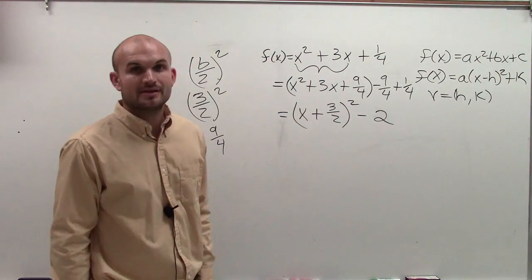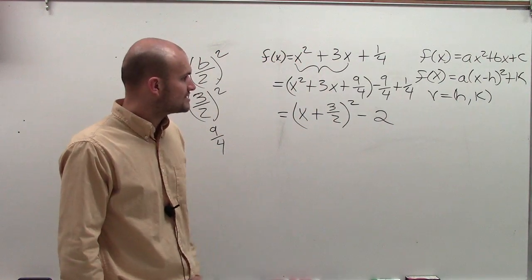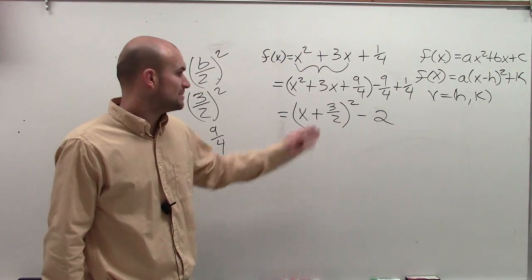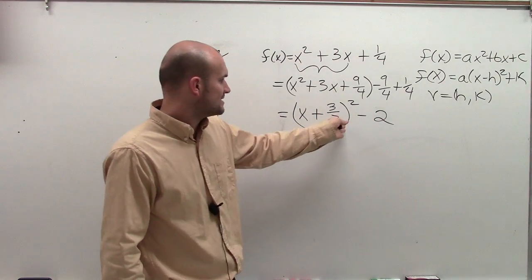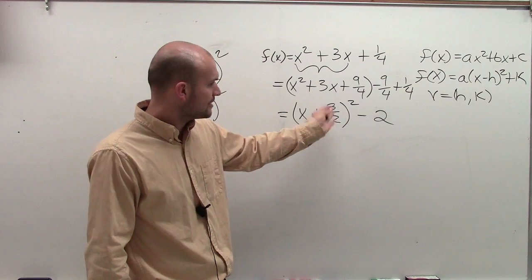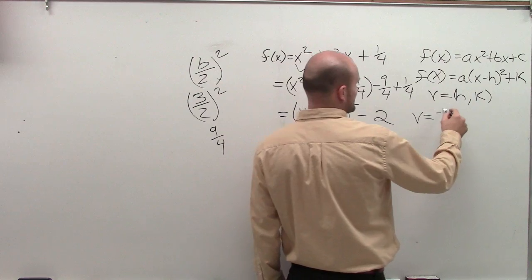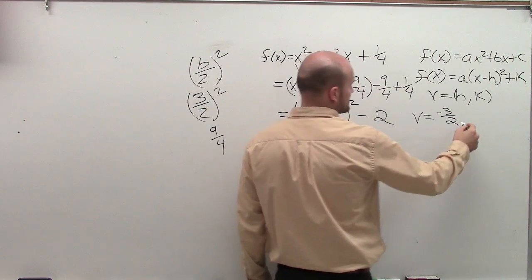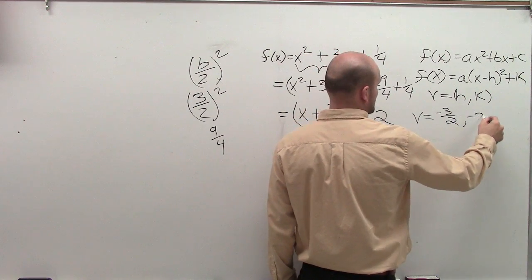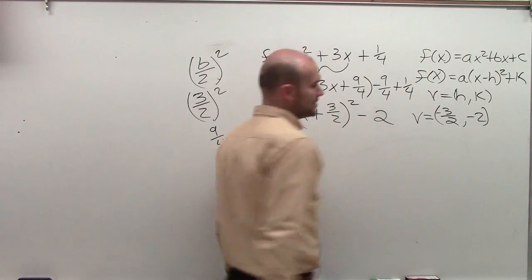All right, so now we have it in our vertex form, and we can determine, we can say, all right, well, this is going to be, we can set this as your vertex, where we could say my vertex in this problem is going to be the opposite of b, which is a negative 3 halves comma negative 2. And there goes your vertex.